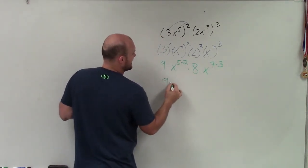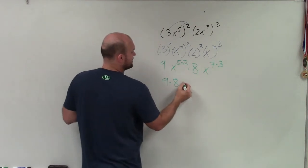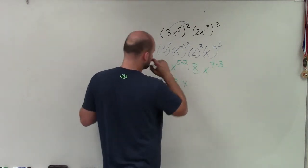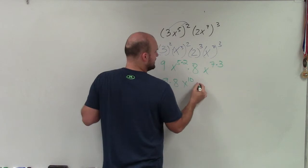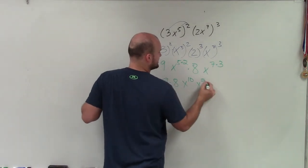Now I can rewrite this as 9 times 8. And then this becomes x to the 5 times 2 is 10. And this becomes x to the 7 times 3 is 21.